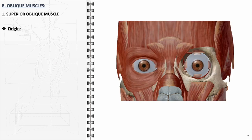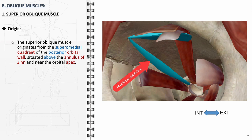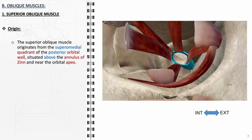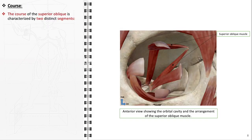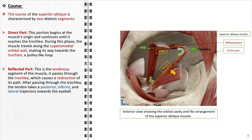The superior oblique originates in the superomedial quadrant of the posterior orbital wall, specifically from the lesser wing of the sphenoid bone. Its point of origin is adjacent and superior to the annulus of Zinn, and lies superomedially to the origin of the superior rectus muscle. The course of the superior oblique muscle is characterized by two distinct segments. The direct part originates from the superomedial quadrant of the posterior orbital wall and extends approximately 30 mm, running forward along the superomedial corner of the orbit, situated between the superior rectus and the medial rectus muscles. As it progresses, it approaches the trochlea, a unique pulley-like structure, marking the transition to the next segment.